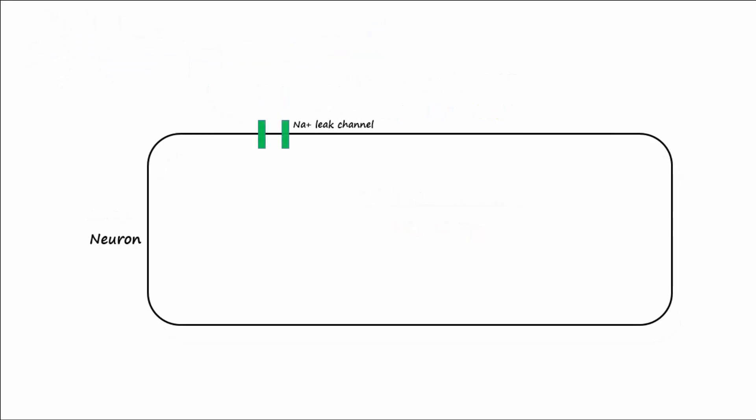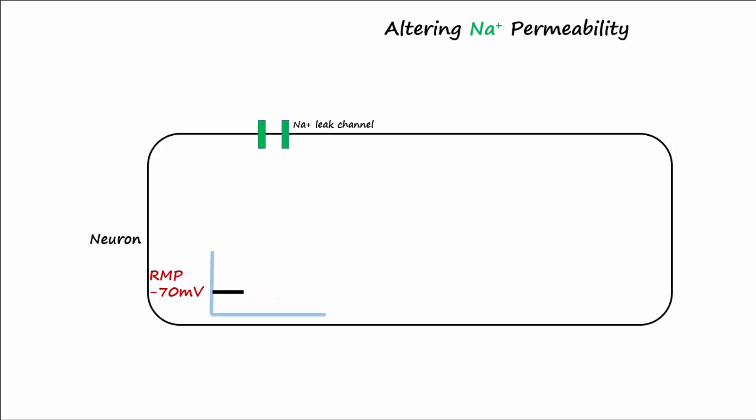What if leak channels for sodium were added to the membrane of the neuron? This would increase the permeability of the cell to sodium. How would this affect the resting membrane potential for the neuron? Remember the law of diffusion — you must first determine which way sodium would go. It would go from high to low, and sodium is higher outside the cell compared to the inside, so it would come into the cell.